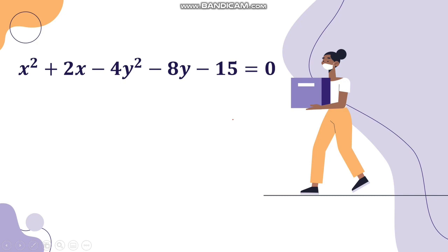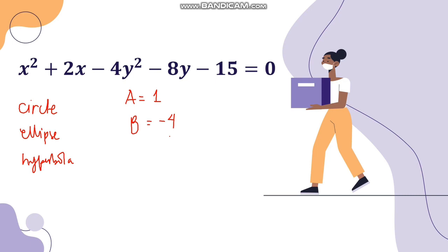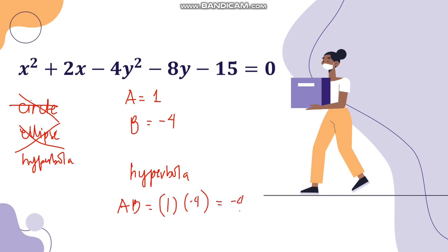Finally, consider X² + 2X − 4Y² − 8Y − 15 = 0. Both X squared and Y squared are present, so choices are circle, ellipse, or hyperbola. A equals 1 and B equals negative 4. Since they are not equal, it is not a circle. Since one coefficient is positive and the other is negative, they have opposite signs — this is a hyperbola. Multiplying AB gives 1 times negative 4 equals negative 4, which is less than 0, confirming it is a hyperbola.